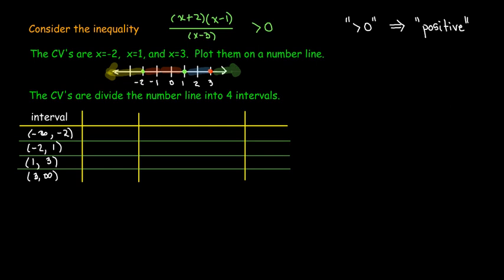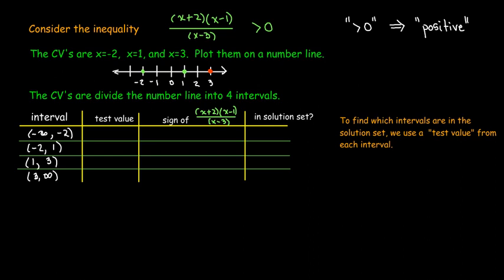In each interval, I'm going to choose a test value — not on the boundary; none of the critical values can be test values. I'll choose a test value from each interval and then look at the factored form. I don't need to actually calculate the numbers; I just need to know if each factor results in a positive or negative number. That combination will tell me whether the result is positive or negative, and therefore whether that interval is in the solution set.